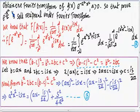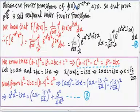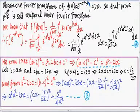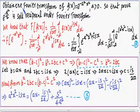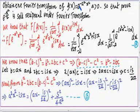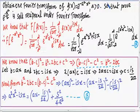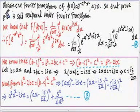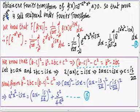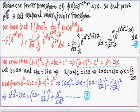Students, we have been given a problem here: obtain the Fourier transform of f(x) = e^(-a²x²), where a is always greater than 0. Also, prove that e^(-x²/2) is self-reciprocal under the Fourier transform.